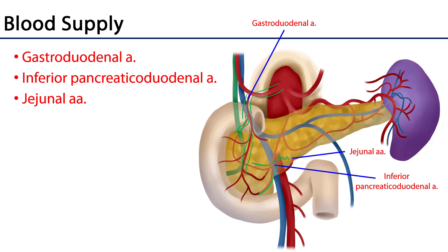In addition, jejunal arteries coming off the left lateral side of the SMA will also supply blood to the duodenum.